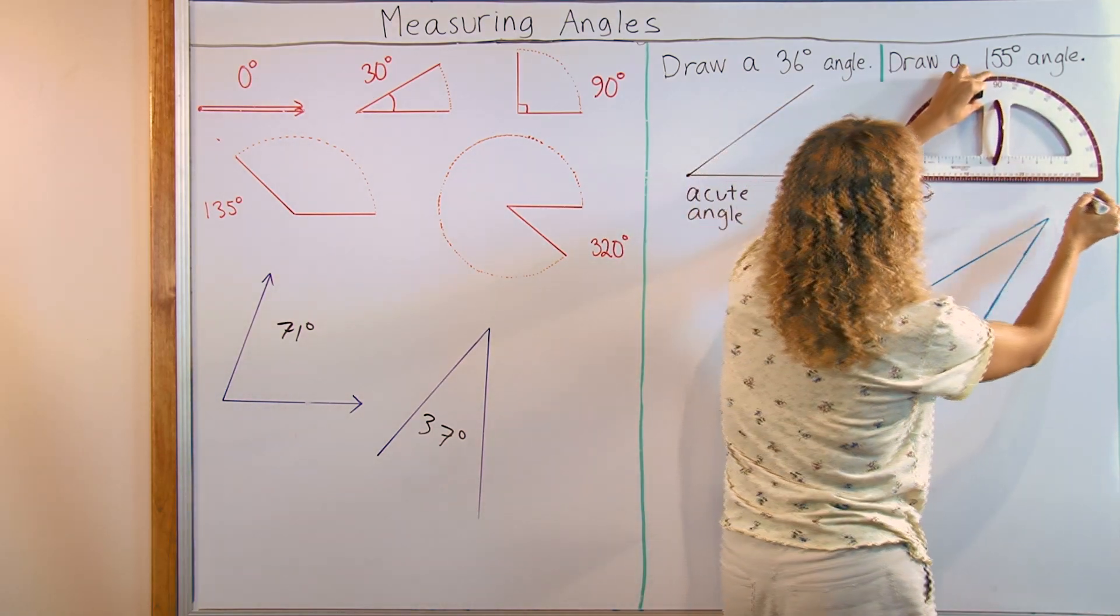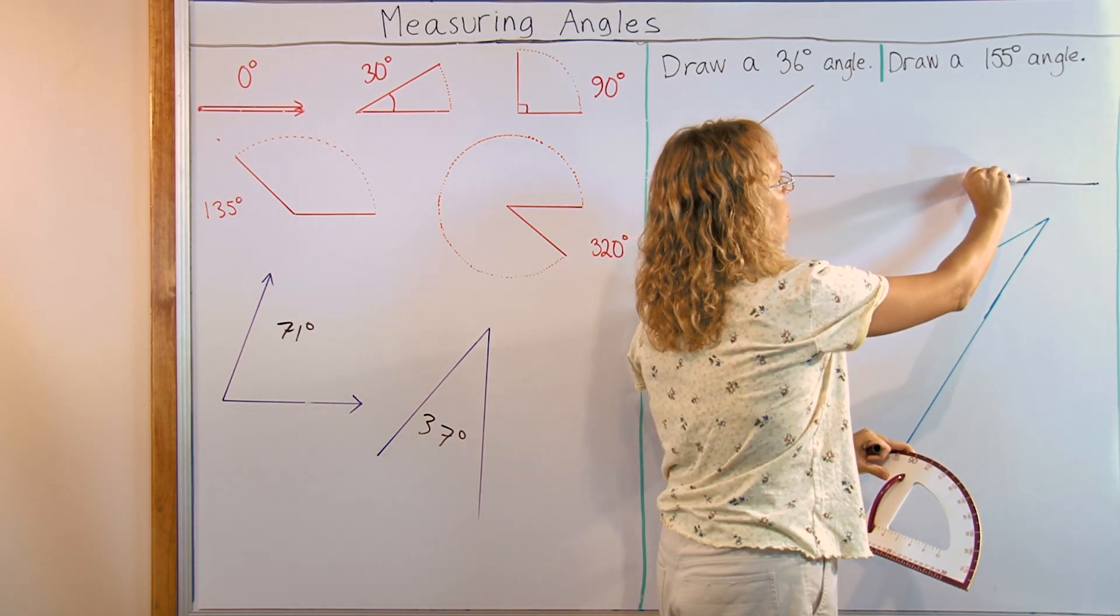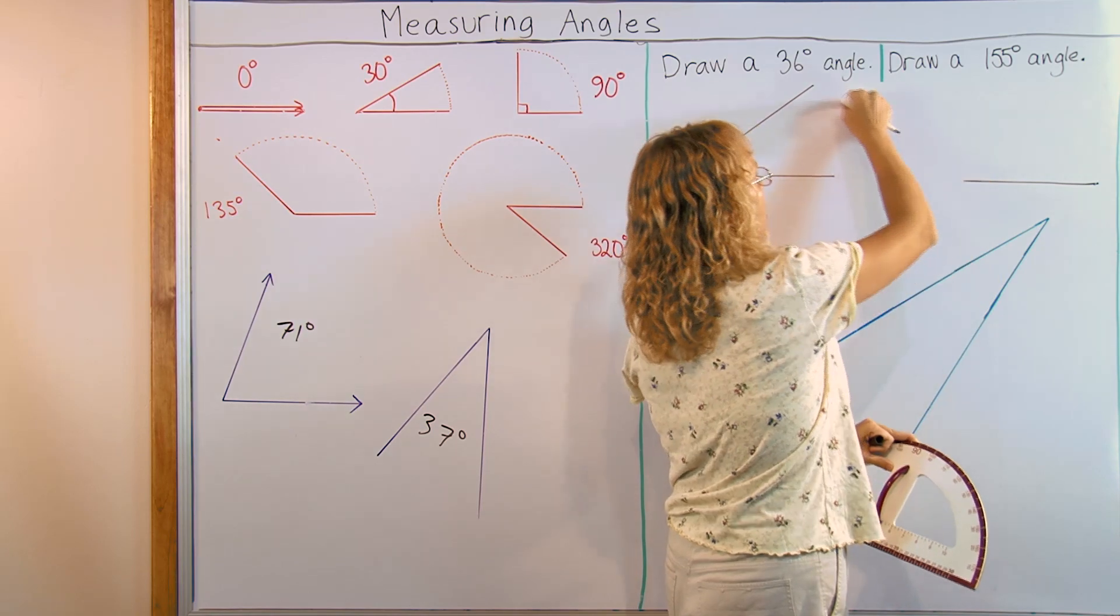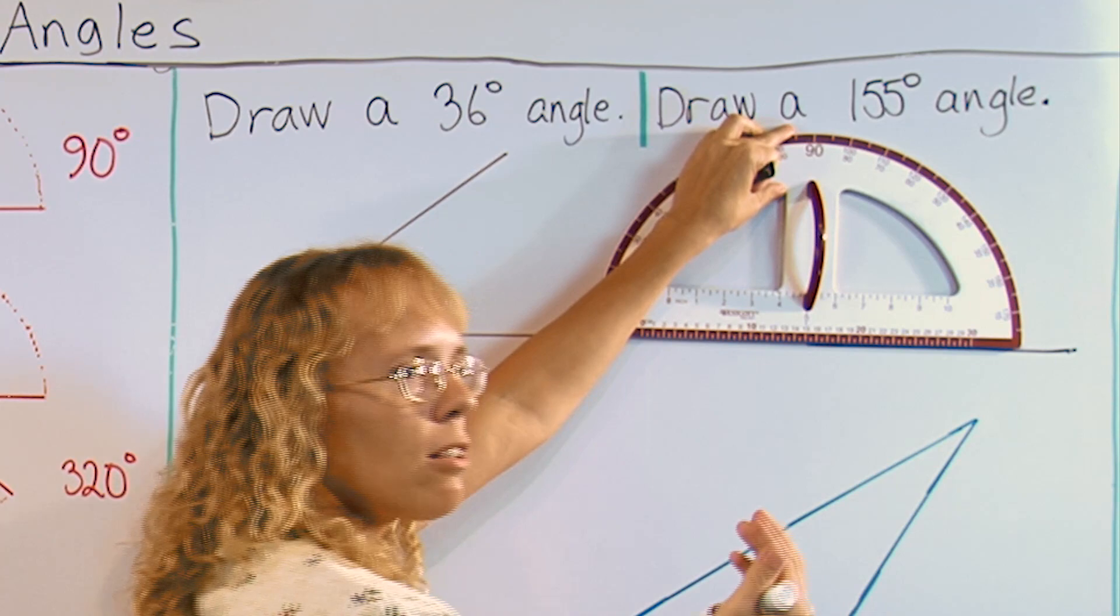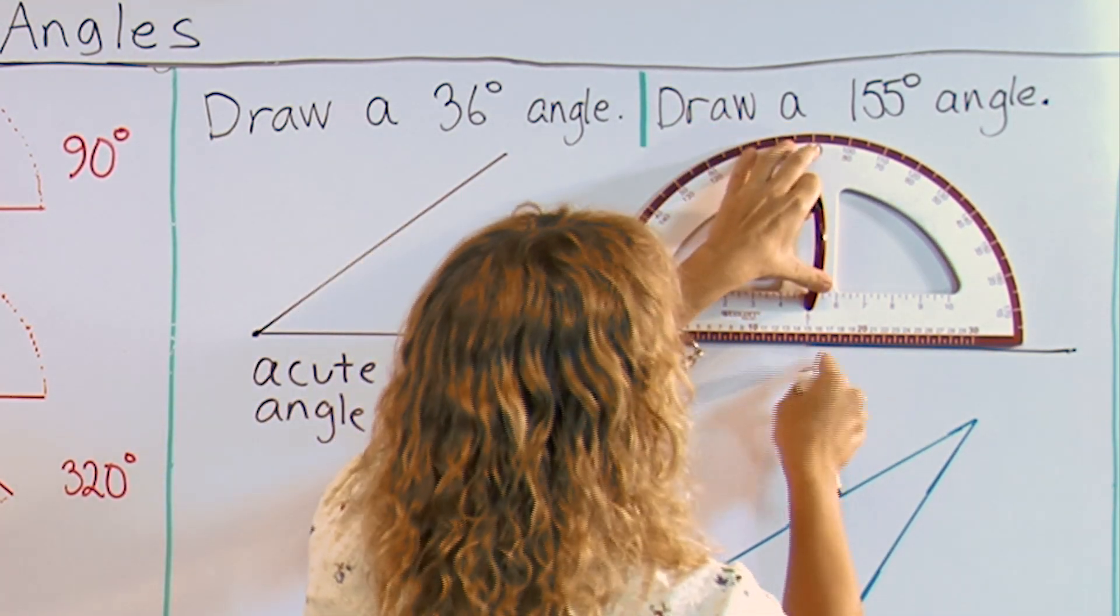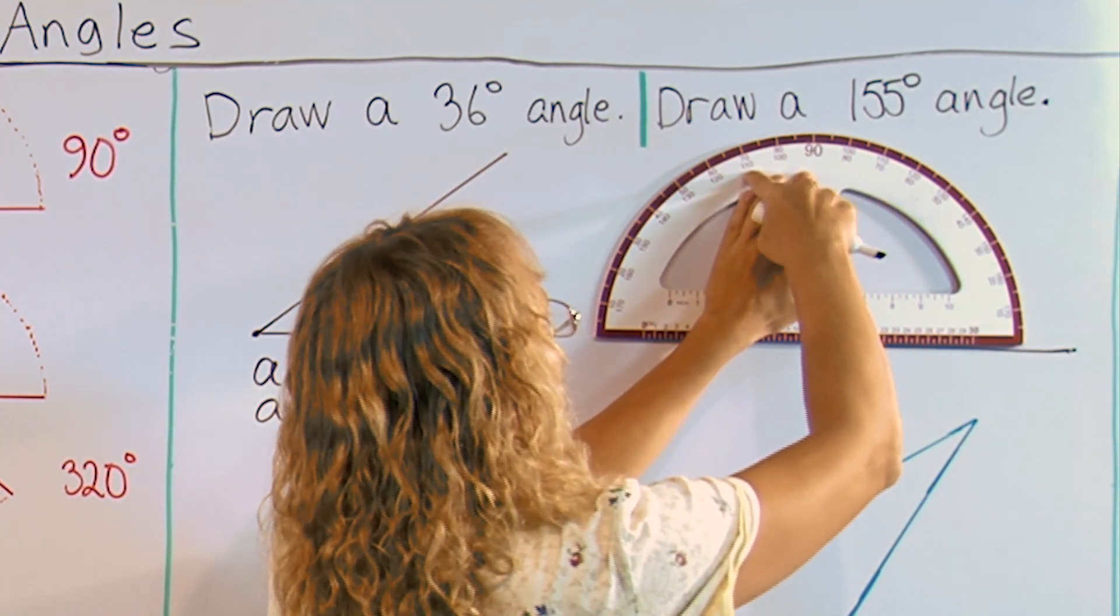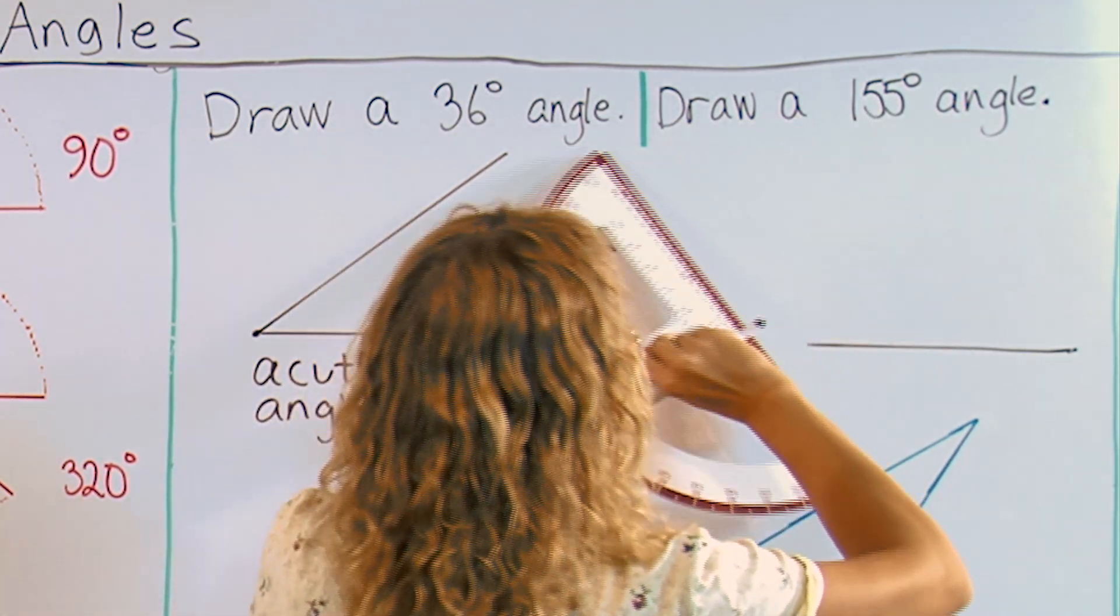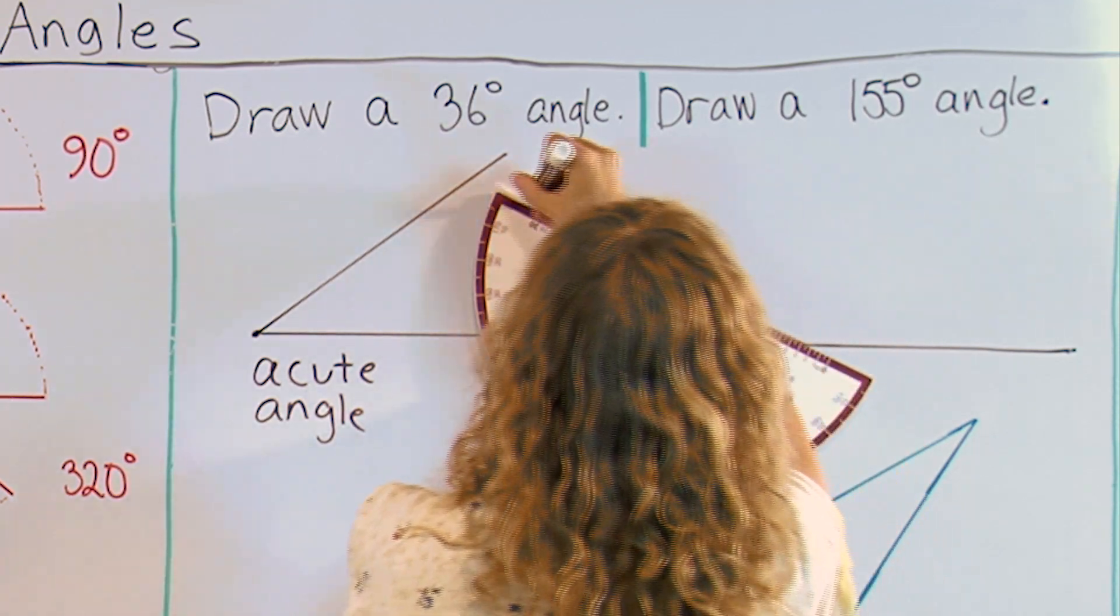So to draw it, I have to first start out by drawing a line again, and I know that my angle is going to open up from here up to 90 and some more. It's going to be somewhere here. So again, position the zero line of your protractor with your line you drew, and then the midpoint here. And now I have to go past 90 to 100, 110, all the way to 150, 155 over here, and draw a mark, and then draw my line.